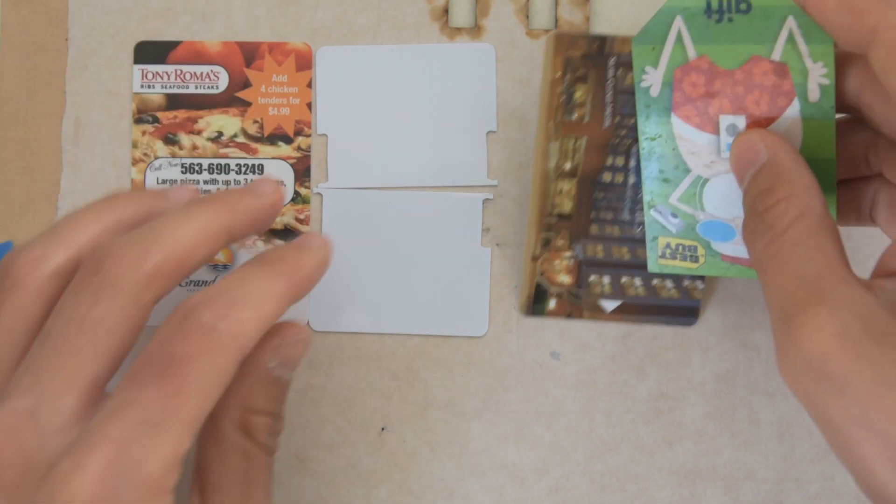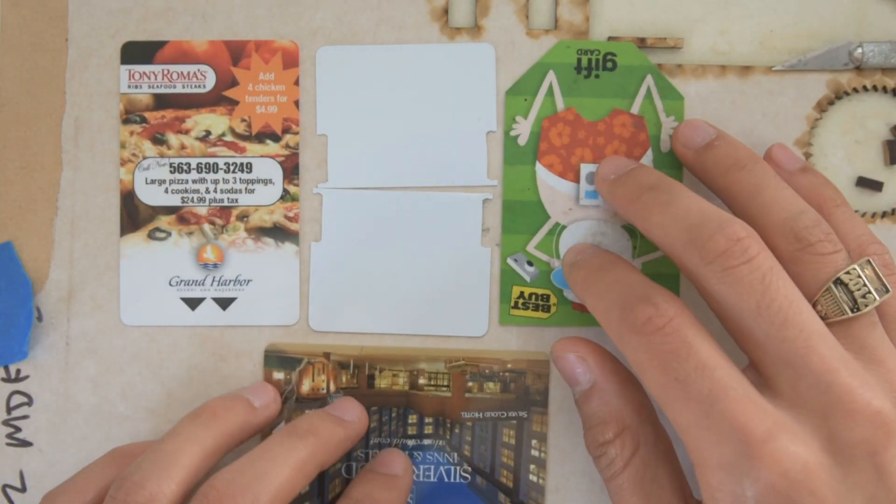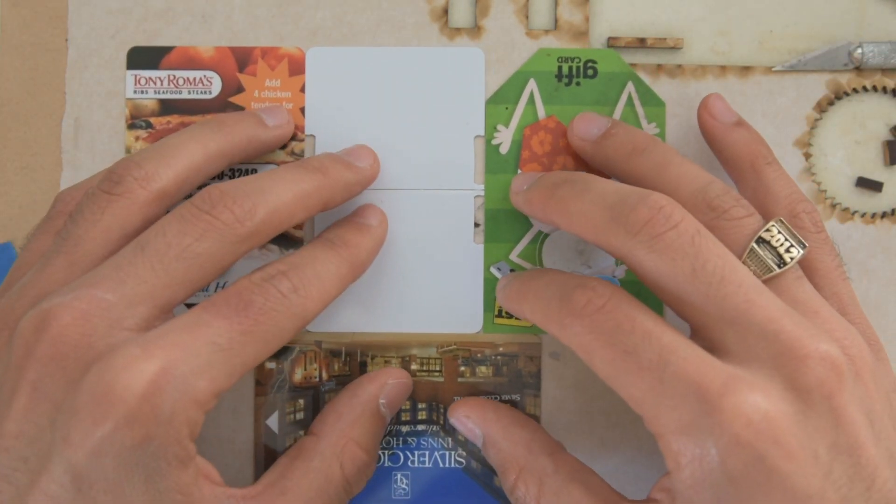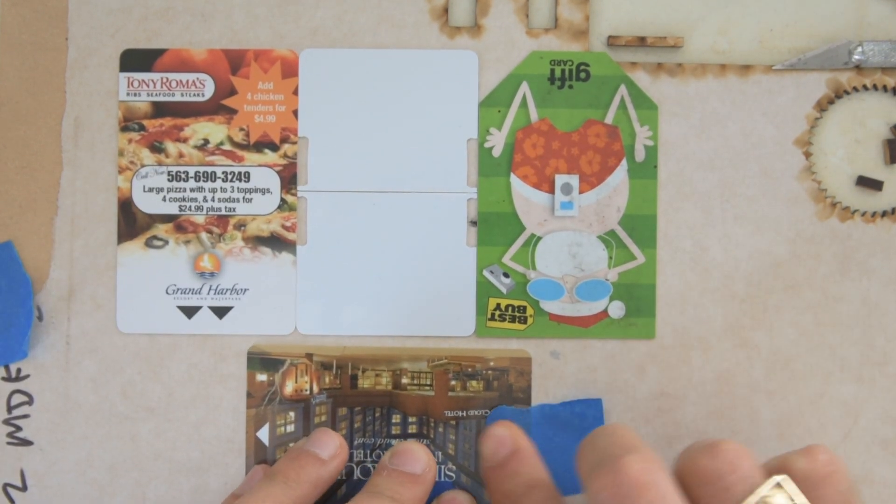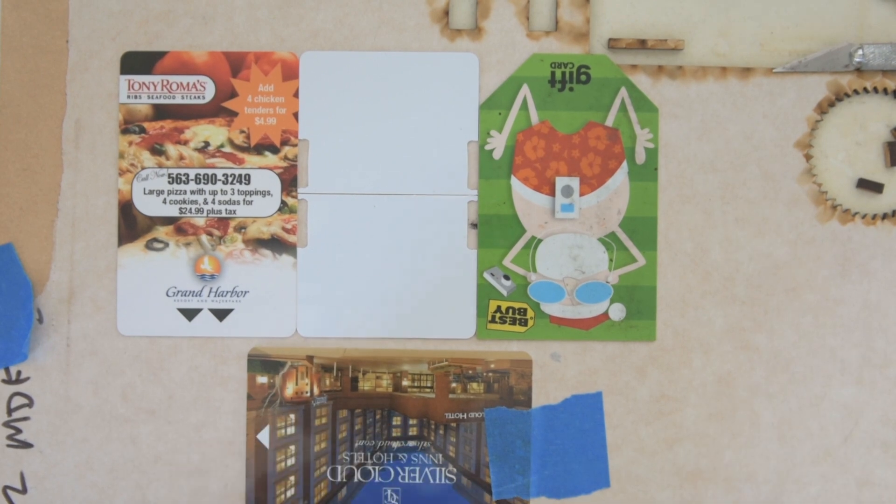So to do that, we're going to take three of our cards to surround it like this. And so we can just go ahead and tape these down into place.